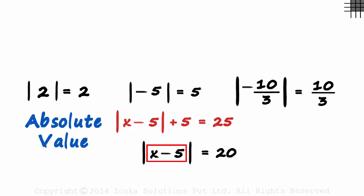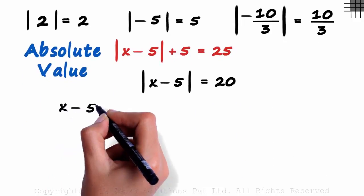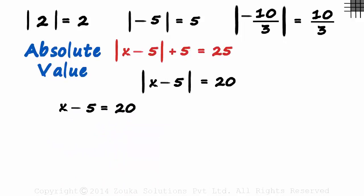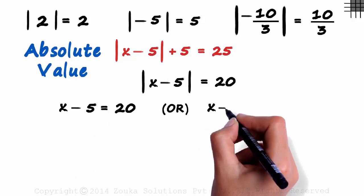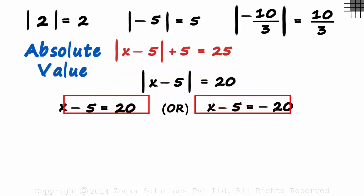This x minus 5 which lies inside the absolute value sign can be 20 or minus 20. That's because absolute value of 20 as well as the absolute value of minus 20 will both equal 20. x minus 5 can either be equal to 20 or it can be equal to minus 20. This equation boils down to these two mini equations.